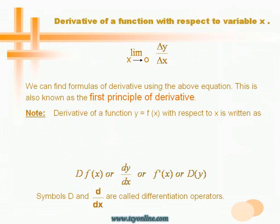Till now we were finding the derivative of a function at a fixed point. Now let's see how to find the derivative of a function with respect to variable x, given as the limit as x approaches 0 of the change in value of y over the change in value of x. Let's look at the different notations of the derivative of a function y equals f(x) with respect to x: df(x), or dy over dx, or f'(x), or dy — where the symbol d/dx is the differentiation operator.